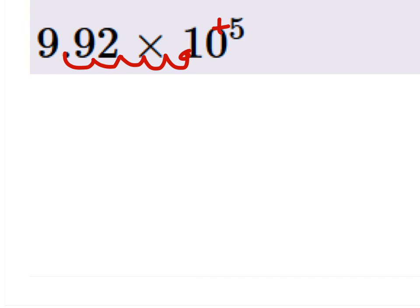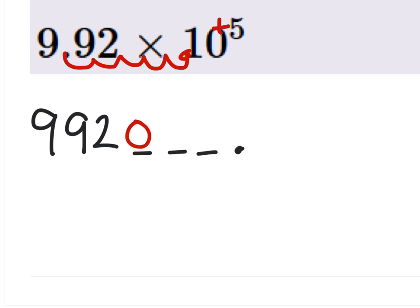Problem here is that we have empty spaces, right? 9, 9, 2, and then we have 3 empty spaces in the decimal. So what do we put in the empty spaces? Zeros. So 992,000 would be our answer.